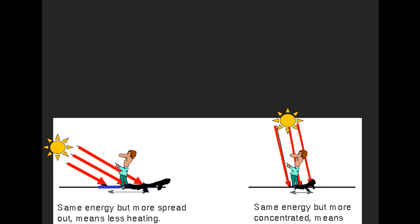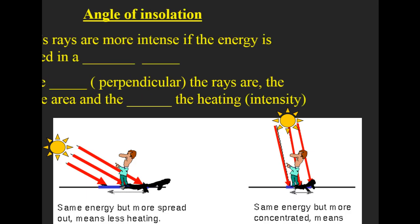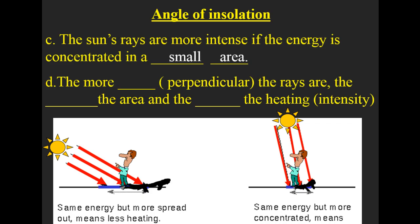We've all received the same amount of energy. The key is that it's hitting the Earth at different angles, to make those angles spread out more — and that's what makes it less intense. So the sun's rays are more intense if the energy is concentrated in a small area, and the more direct, or perpendicular, rays mean a smaller area and greater intensity, or greater heating.